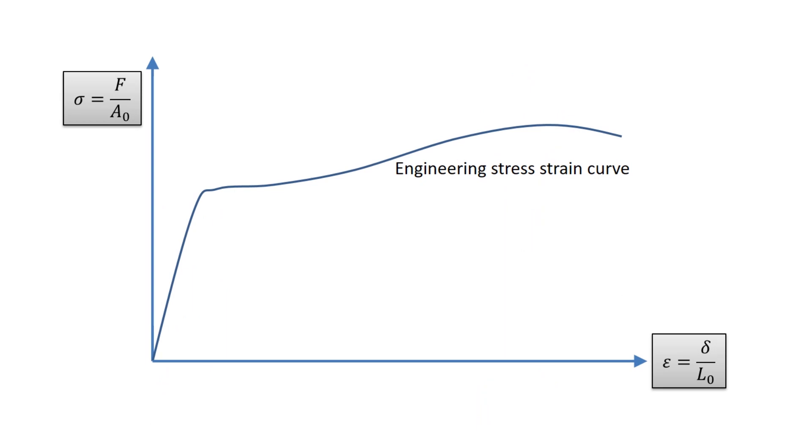There are other types of stress-strain curves that can be drawn. If the force during the test is divided by the actual cross-sectional area, the resulting value is called the true stress. And if we use a different measure of strain called the true strain, the resulting curve is termed the true stress-strain curve. Therefore, the true stress-strain curve is usually higher than the engineering stress-strain curve.